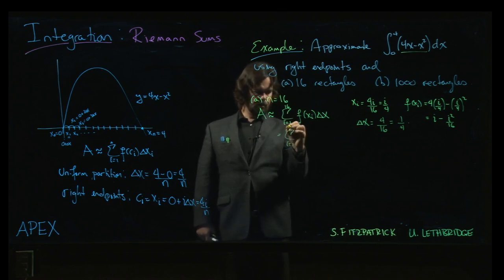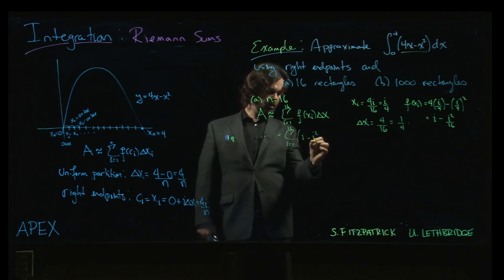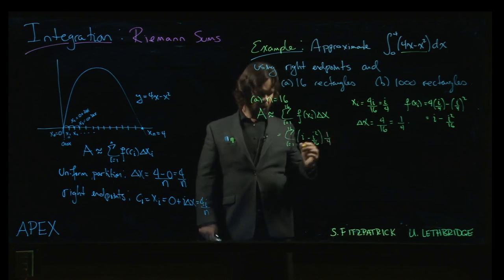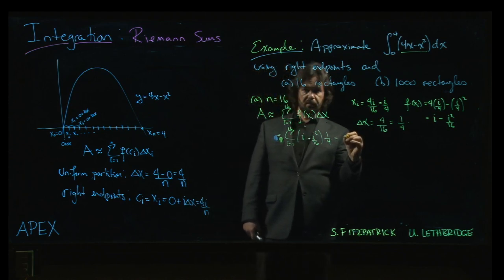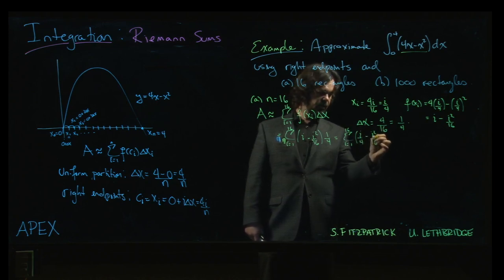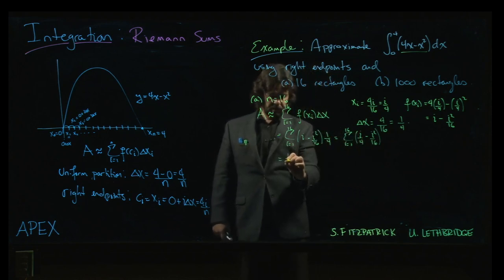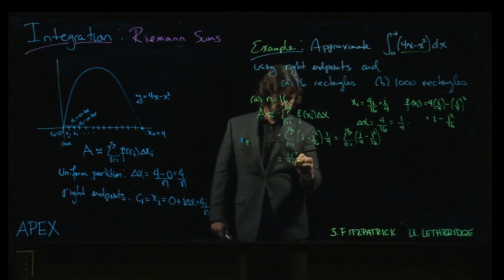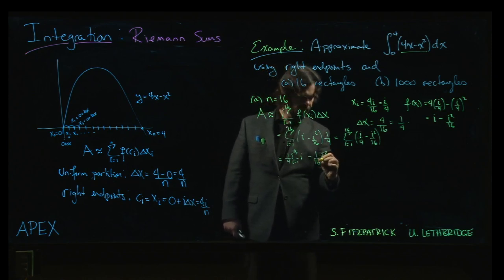So we put all that in: sum, i going from 1 to 16 of i minus i squared over 16 times 1 over 4. And so what we can do now is we can push the 1 over 4 in and we can use properties of summation. So it's i over 4 and then i squared over 16. Our properties will let us break that up into two terms and pull out the constants. So we can write it like this: 1 over 4, sum i going from 1 to 16 of i, minus 1 over 16 times the sum i going from 1 to 16 of i squared.